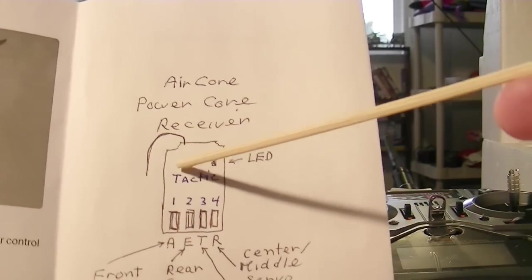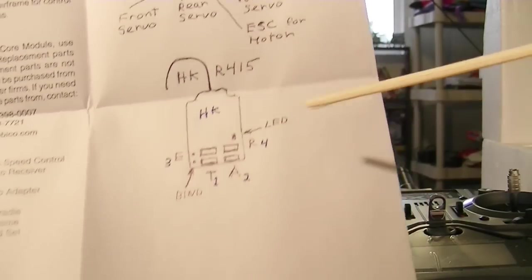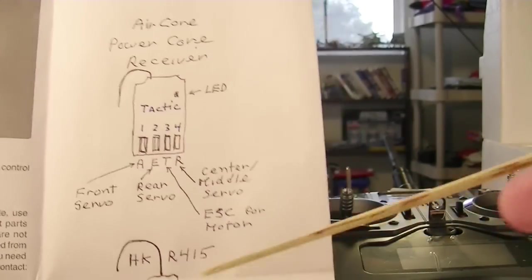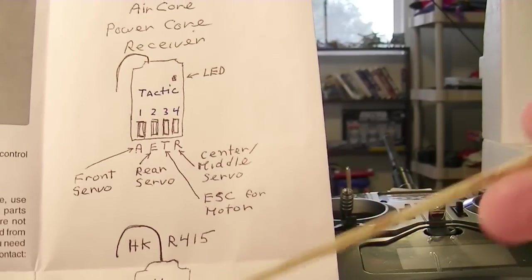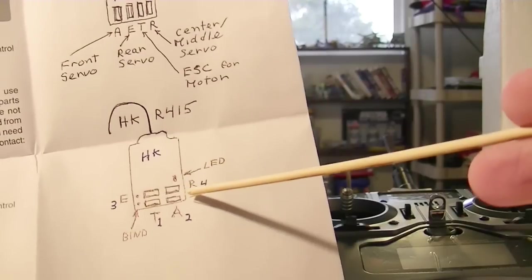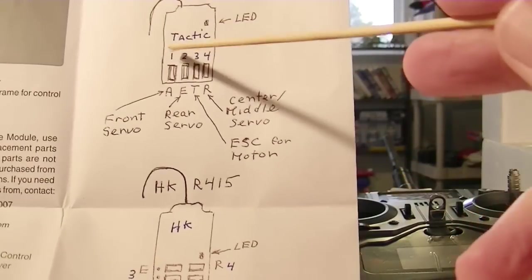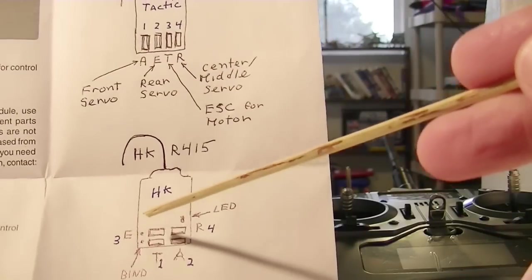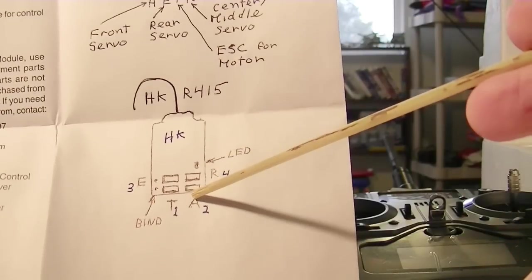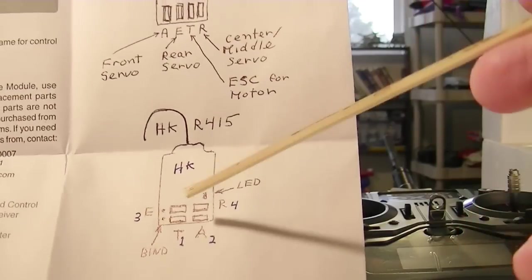The plugs are compatible, so the servo plugs are compatible with the HobbyKing. When you unplug them from the Power Core you can plug them right into the HobbyKing receiver. You just have to put plug one into socket one, two goes into two, three goes into three, and four goes into four.